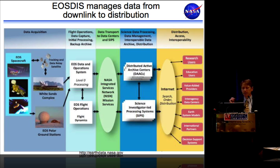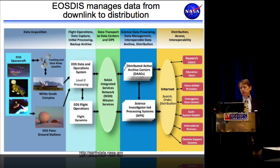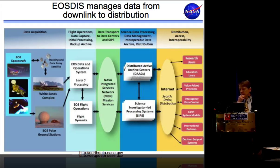There are two main components. The science investigator-led processing systems are responsible for taking raw satellite data and retrieving geophysical quantities like that total carbon monoxide. They ship that data to the distributed active archive centers — the most important parts being 'distributed' and 'active.' NASA is really more about distribution of data out to the user community, which includes research users, education users, Earth system models, and decision support systems.